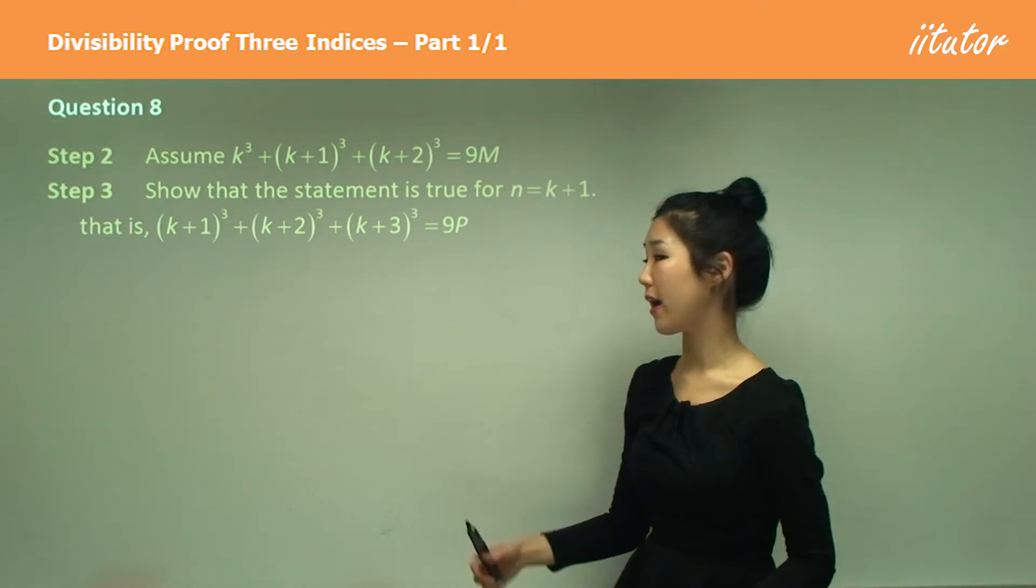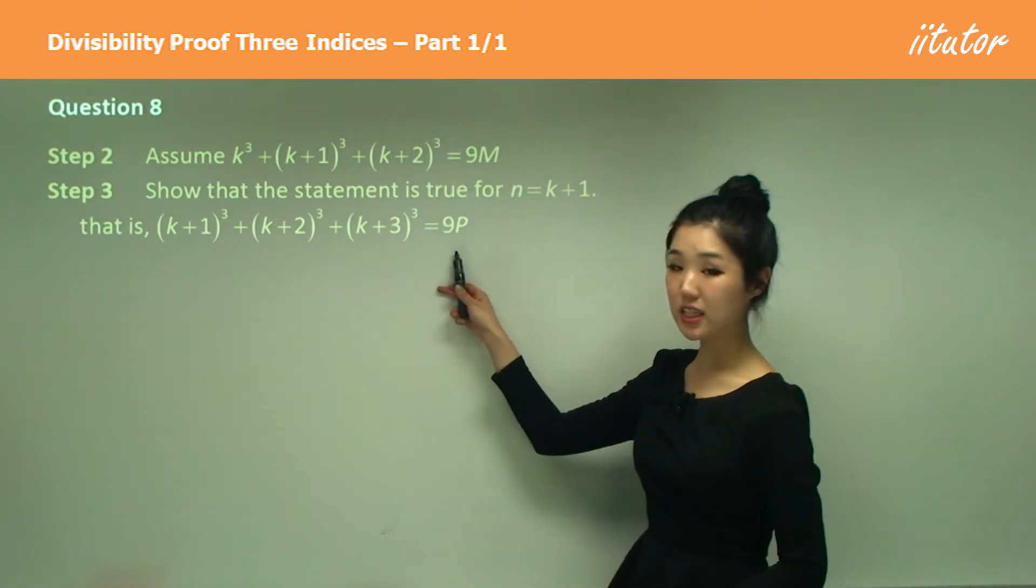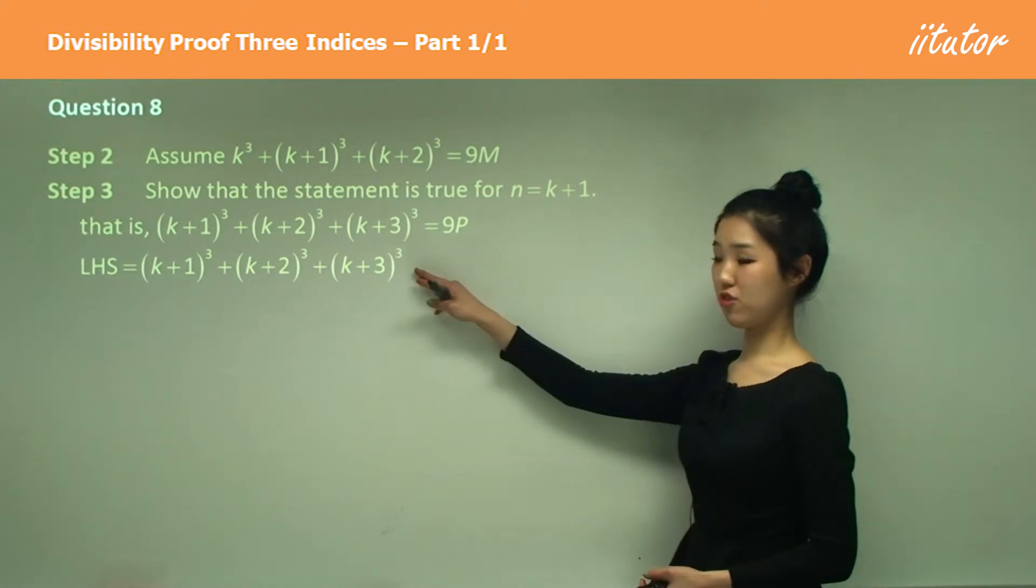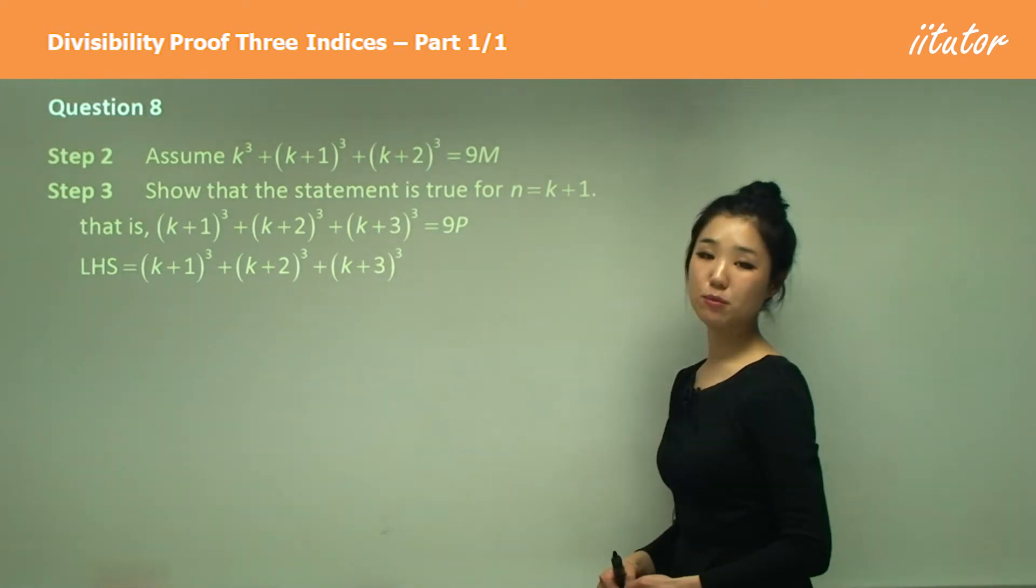We want to prove that it's divisible by 9, so I'm going to make it equal to 9 times some integer p. Starting from our left hand side, which is just this, we're going to try to link it with our assumption.